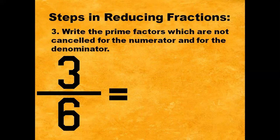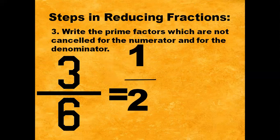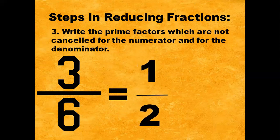Step number 3: Write the prime factors which are not cancelled for the numerator and for the denominator. So, the answer is 1/2. In short, the lowest term for 3/6 is 1/2.